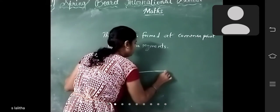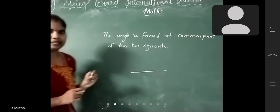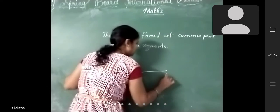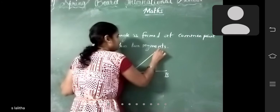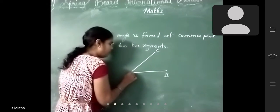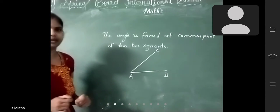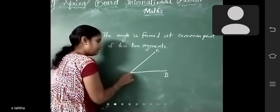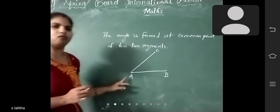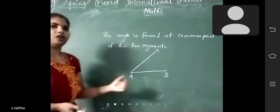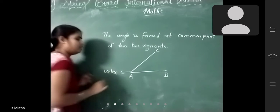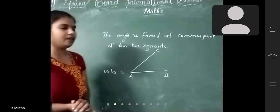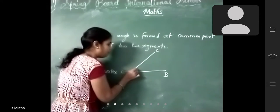Suppose I have to draw two line segments. This is A, this is B. Another line segment I draw here — this is C. Now these two line segments are formed at a common point. They are joined at a common point. What is that common point here? A. What do you call that one? You can call that one a vertex. Vertex is nothing but a corner. So where the angle forms — here it will form an angle.